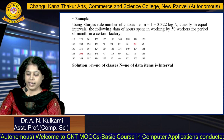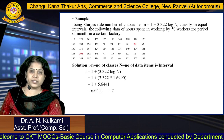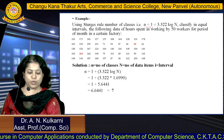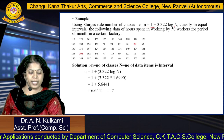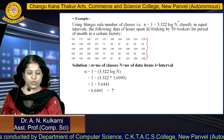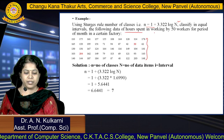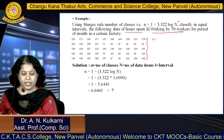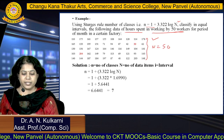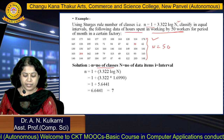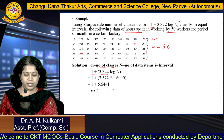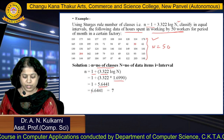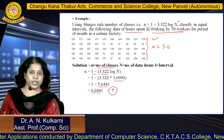Now see an example based on this. Using the Sturgis rule we can find out the number of classes for the given data items. The formula is n = 1 + 3.322 × log N, where capital N is the number of data items. We need to classify in equal intervals the data of hours spent working by 50 workers. Here N = 50, so log 50 = 1.6990. Multiplying: 3.322 × 1.6990 = 5.6441, plus 1 = 6.64, which rounds to 7 classes.